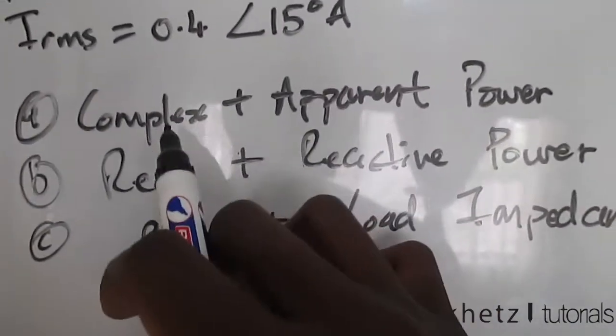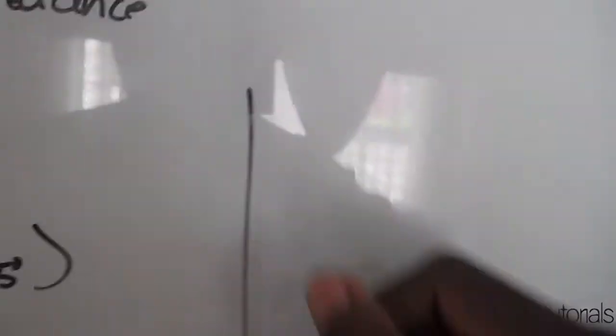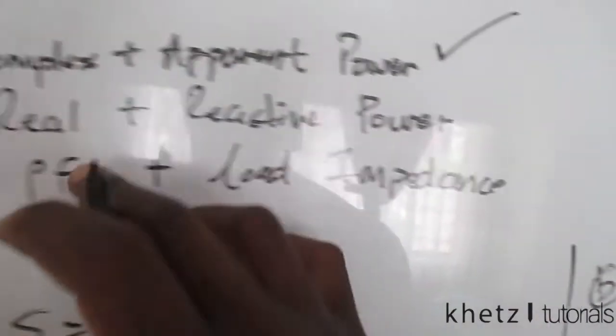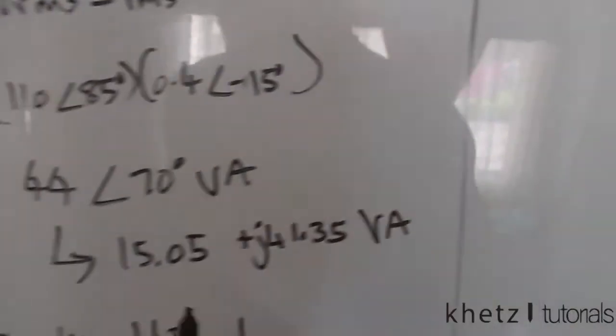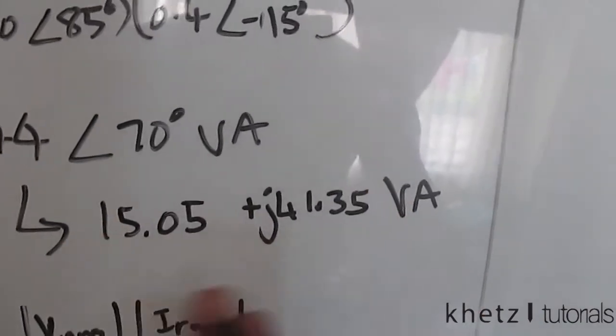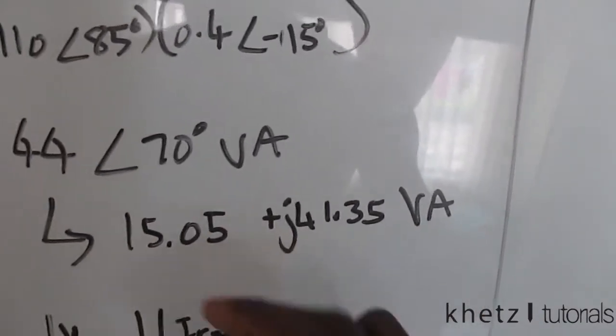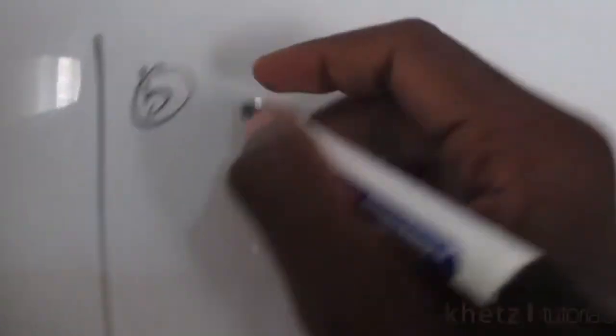So now we've answered the first part of the question which was asking for the complex as well as the apparent power. Let's proceed to answer the second part of the question which is asking for the real and the reactive power. So now if you go back to your complex power, you can see that we expressed it in this rectangular form.